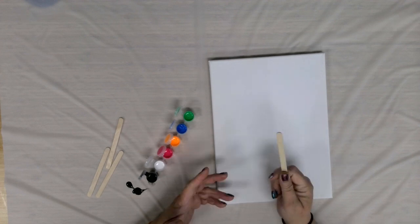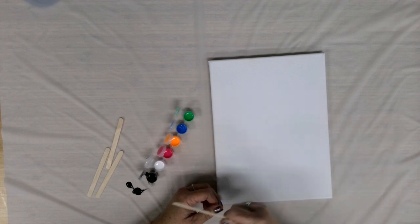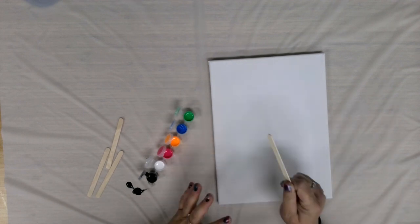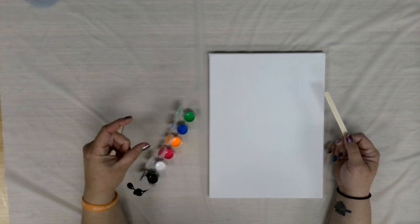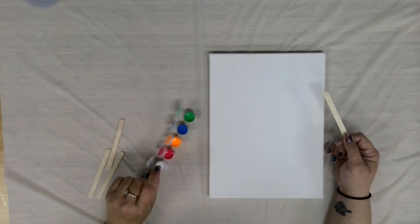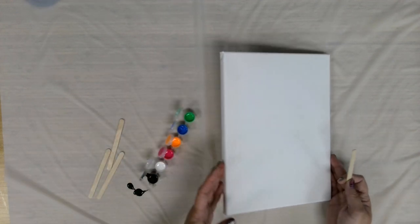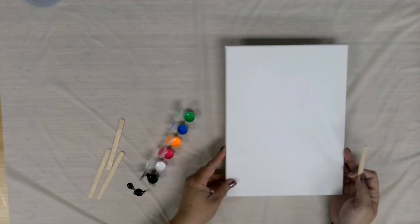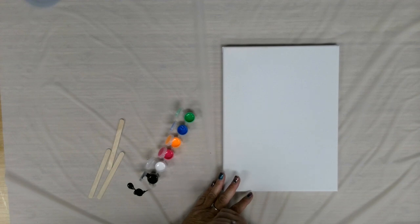So doing like a clean pour where you do one color and then the next color and the next color is similar to what we're going to do with this project. A dirty pour would be you would get another kind of small cup or something, you would pour all of the colors into it at the same time, and then you would pour that and make your canvas move. But because we're really looking for a splatter effect, we don't really need to mix our colors together.